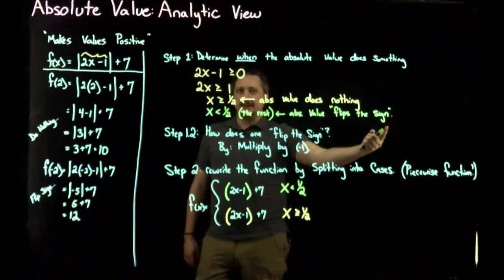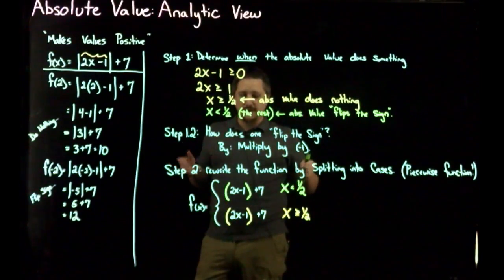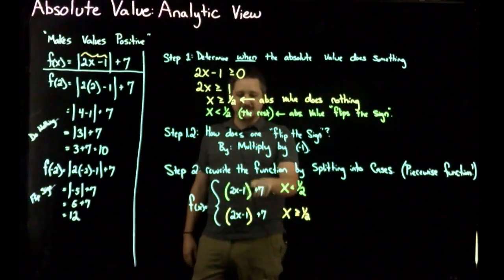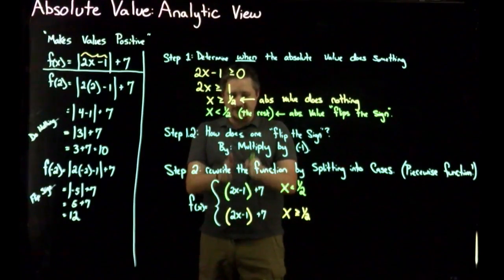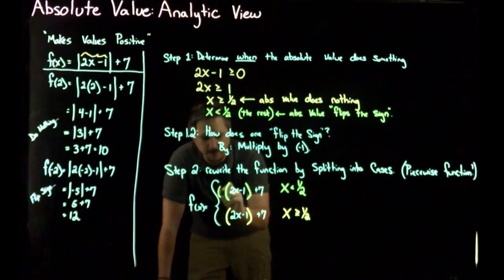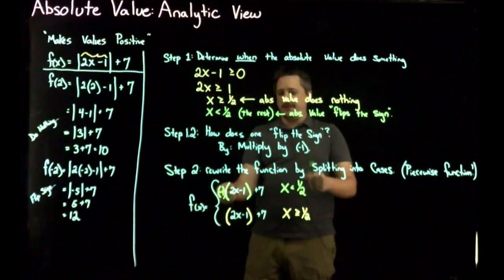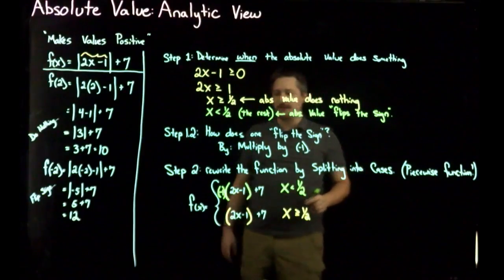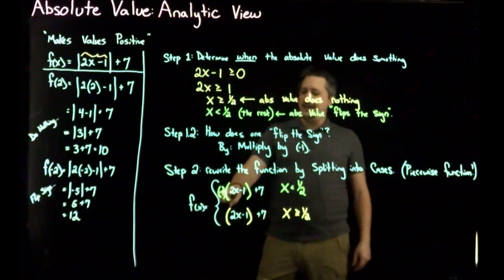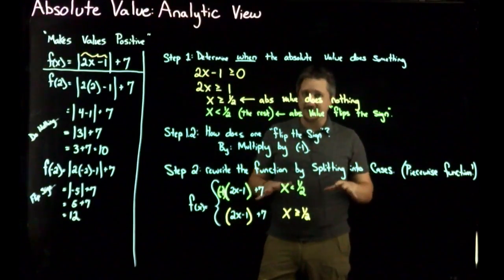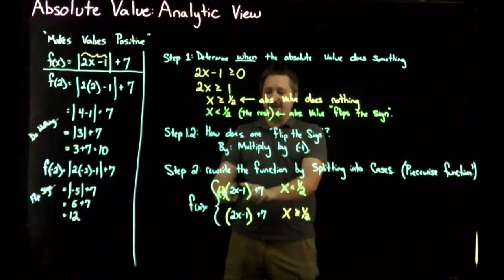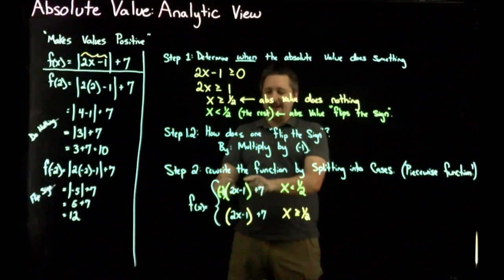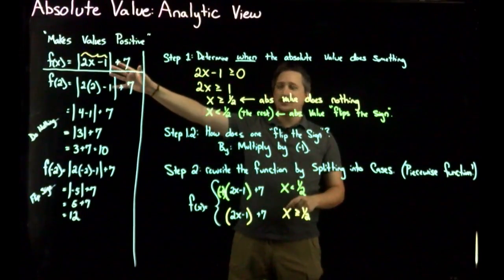For x < 1/2, I still replace the absolute value bars with parentheses, but I also need to flip the sign — so I multiply by negative one. Although it looks like I'm making it negative, that's not what's happening: the domain restriction already ensures 2x minus 1 is negative there, so multiplying by negative one gives a positive result. That's why this correctly represents the absolute value.